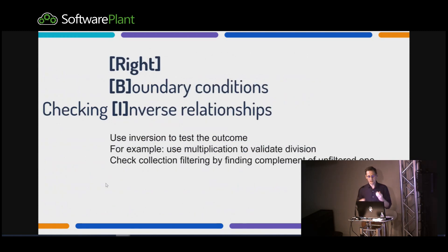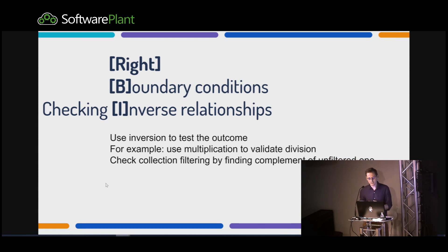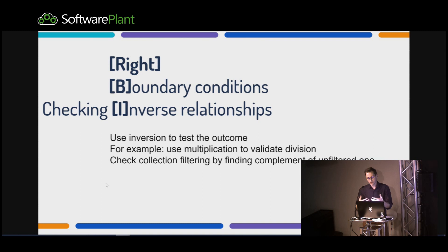Going back to Right BICEP — I for Inverse relationships. It's a funny concept I really like. For example, if I'm testing division and I have 3 divided by 2, I can check if it works by multiplying the result by 2. If I get 3, it works. Similarly, if I have a collection and filter it, I can check not only that the outcome has the elements I want, but also that it doesn't have elements I didn't want. Adding those two collections of wanted and unwanted elements should reconstruct the original collection.